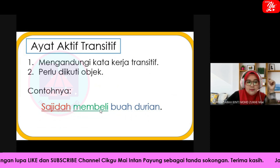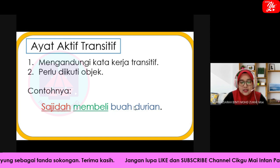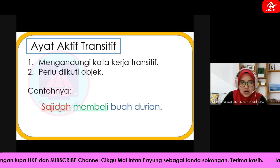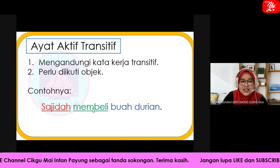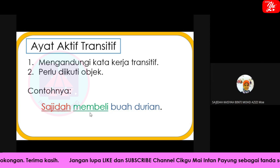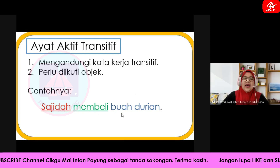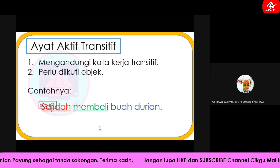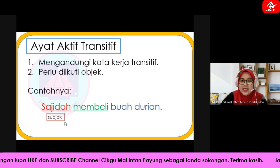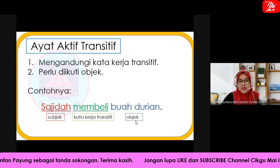Contoh: Sanjidah membeli buah-buahan. Sanjidah ialah nama orang, iaitu subjek. Membeli ialah kata kerja dengan imbuhan awalan mem-. Dan buah-buahan ialah objek. Sanjidah ialah subjek, membeli ialah kata kerja transitif, dan buah-buahan ialah objek. Subjek boleh juga guna 'dua orang murid' atau 'dia', itu pun subjek.